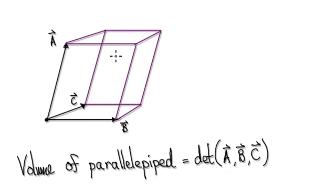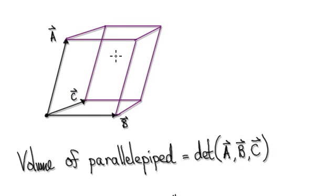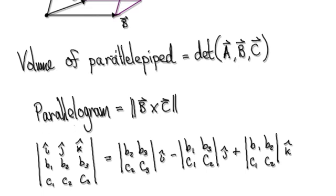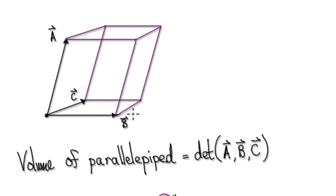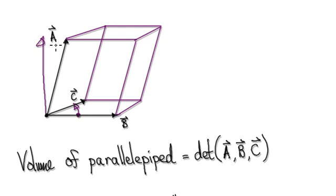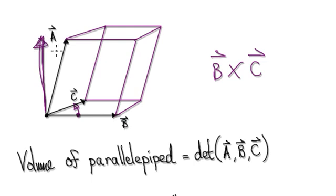So now we're going to develop a new way of working out the volume. But before we do, let me just quickly give you a reminder of the cross product. If you get vector b cross vector c, using the right-hand rule, your thumb will be pointing up in this direction. So b cross c will give you this vector here.